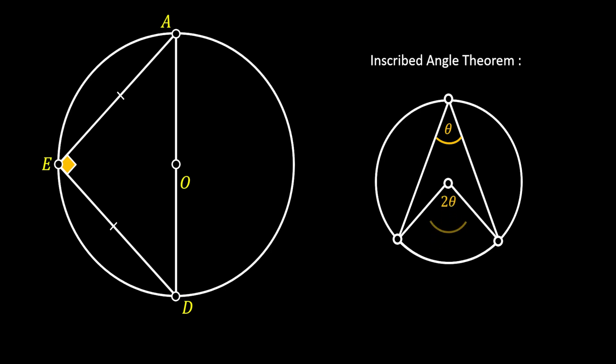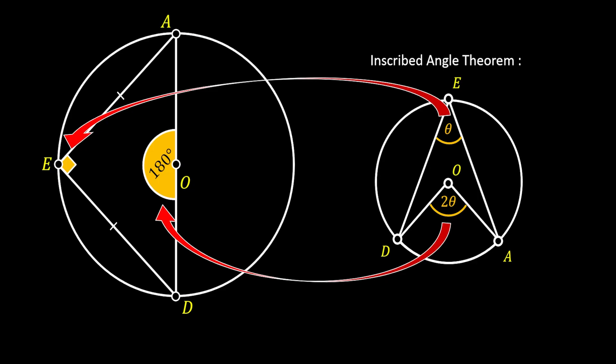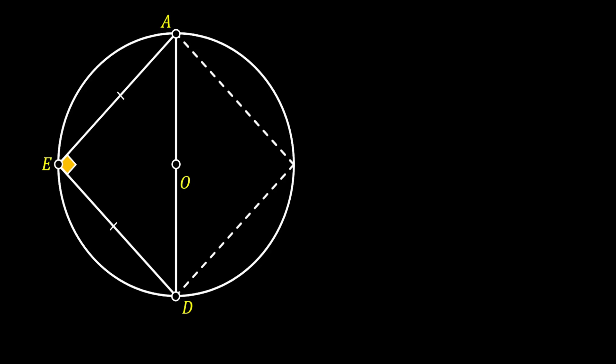We will use the inscribed angle theorem, which states that an angle theta inscribed in a circle is half of the central angle 2θ that intercepts the same arc. Our central angle at point O is 180 degrees, so the angle at point E must be half of 180 degrees, which is 90 degrees. With this in mind, triangle EAD is actually an isosceles right triangle — it represents half of a square.